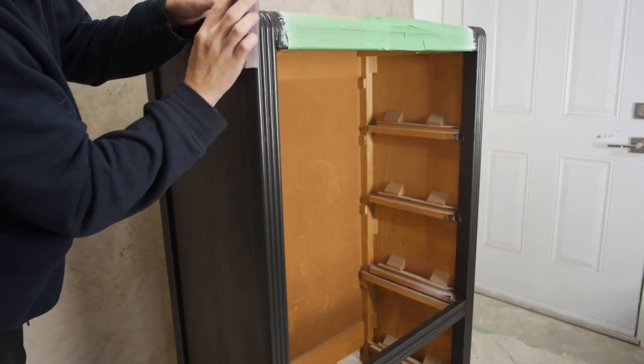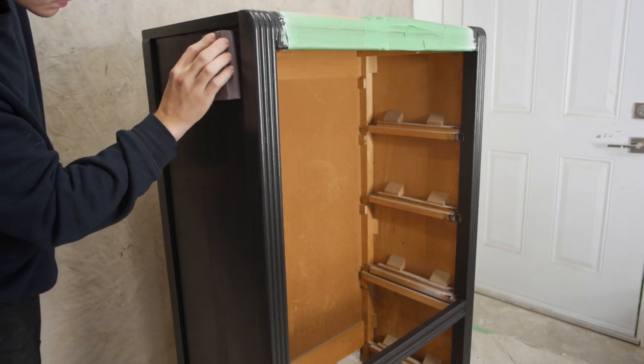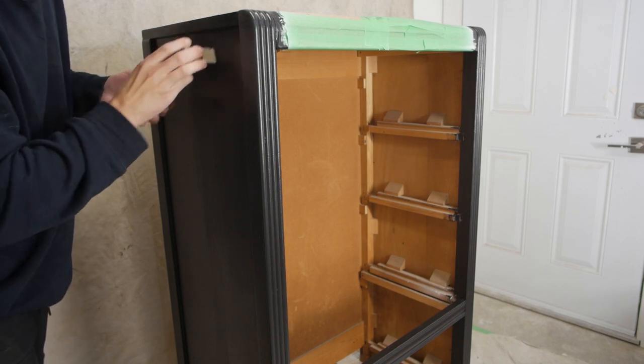After the second coat of paint, I grabbed my sanding sponge and started sanding things down just to make sure everything would be smooth before we put on that final coat.